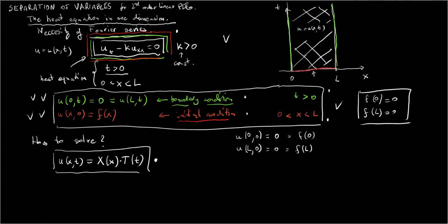Likewise, u(l,0) must be 0 because of the boundary condition and must be f(l) because of the initial condition. So f(l) must also equal 0. Now let us return to our idea of solving the heat equation by postulating a solution which is a product X(x)·T(t).